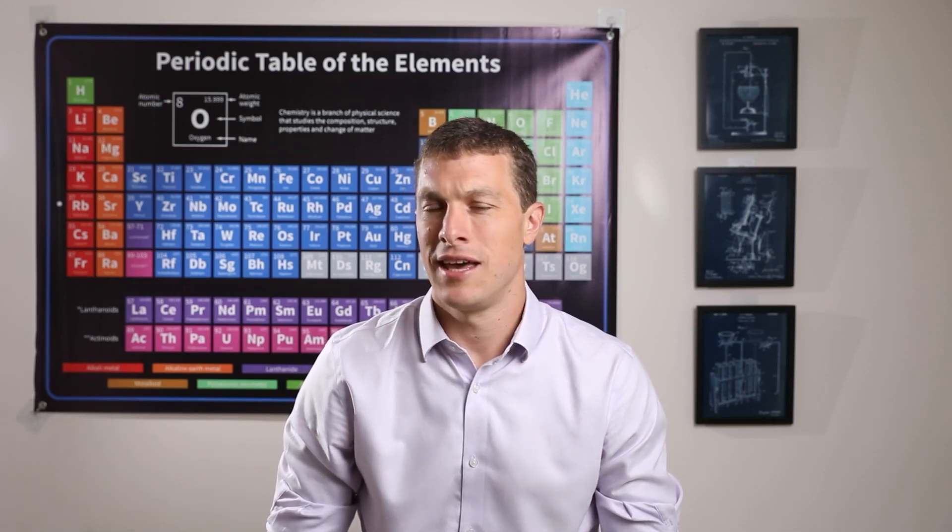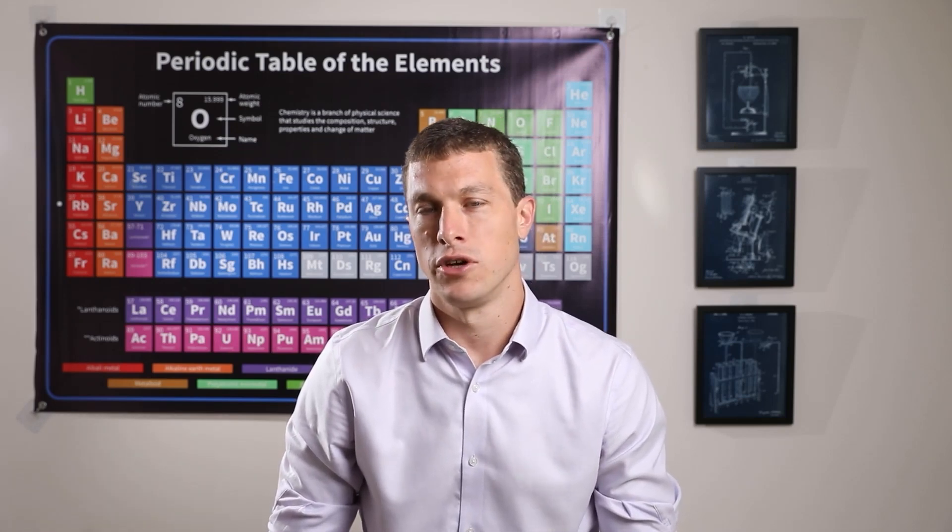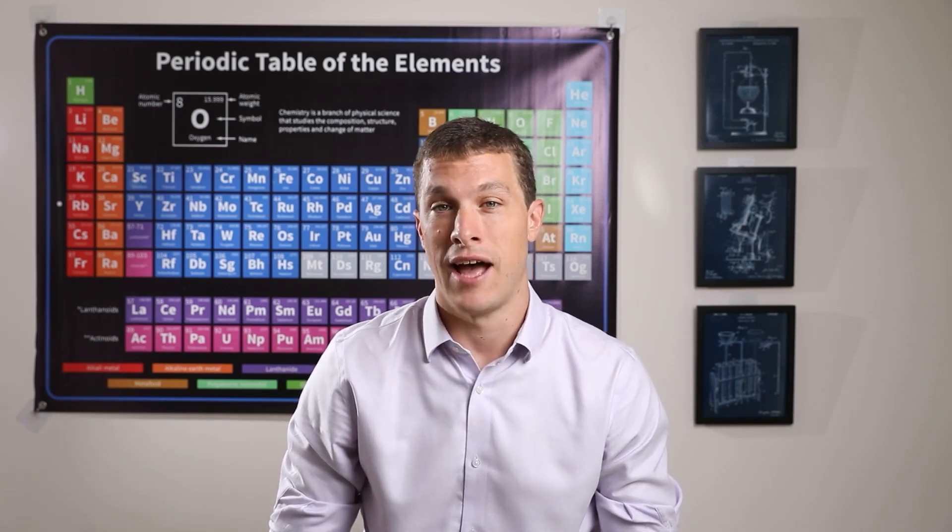We've recently been learning about the quantum mechanical model of the atom. In the quantum model, electrons are smeared out into weird and crazy shapes called orbitals. But what orbitals does a given atom have, and how many electrons are in it? In this lesson, we'll take a look at that with something called an electron configuration — it'll help us understand how the electrons in a particular atom are organized.